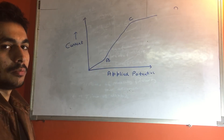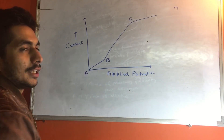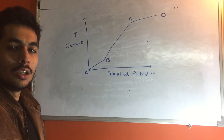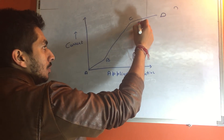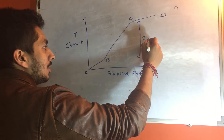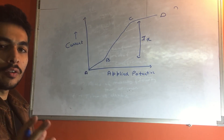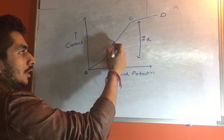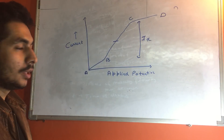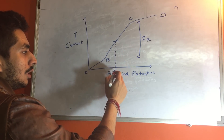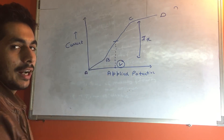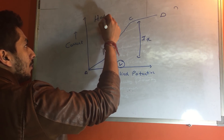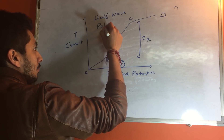Looking at the polarogram: from point A to B is the residual current, from B to C is the diffusion current, and from C to D is the limiting current. To find the half wave potential, we take the diffusion current ID from point B to C. We need to cut it at a point which is half the diffusion current. Corresponding to that point, we find out the applied potential — let's say it is V. This V is known as the half wave potential.